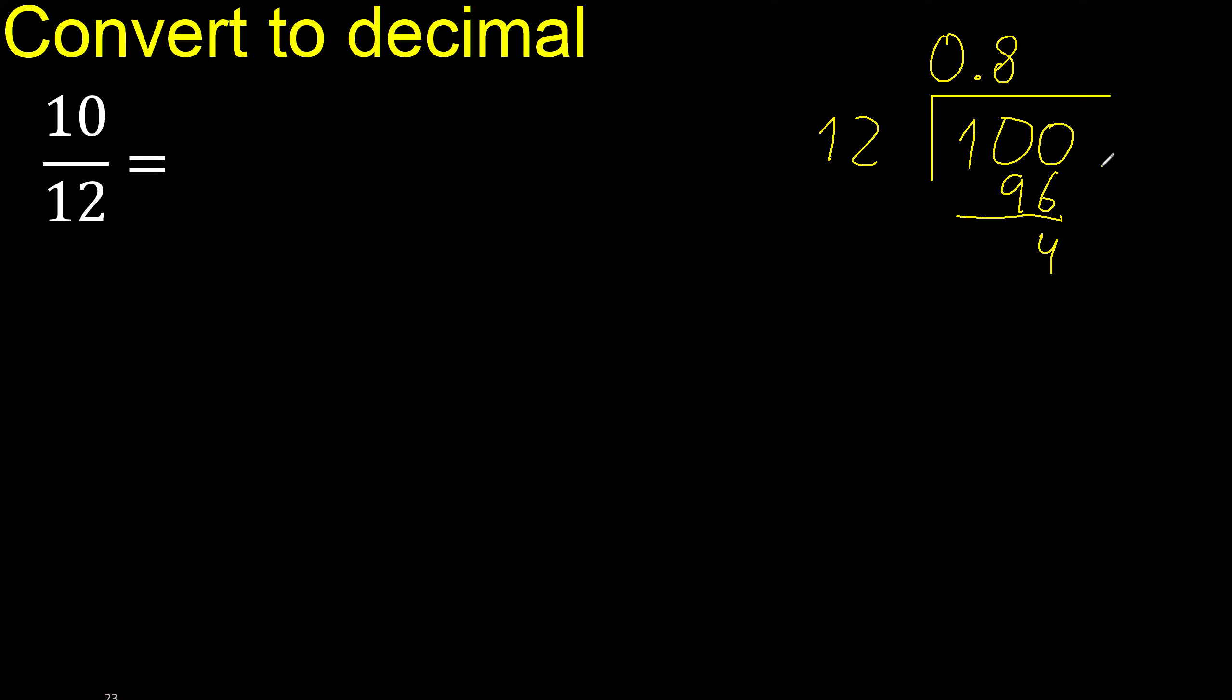Subtract. Next, there is no number, therefore complete. Always complete with 0. Point is here, 0 point. 40. 12 multiplied by 3. 36 is not greater. Subtract.